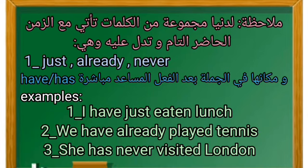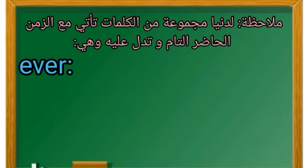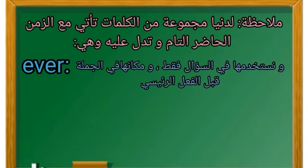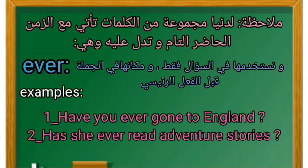We have already played tennis — نحن قد لعبنا كرة التنس مسبقًا. She has never visited London — هي لم تزر لندن أبدًا. أما ever فنستخدمها في السؤال فقط، ومكانها في الجملة قبل الفعل الرئيسي. مثال: Have you ever gone to England? — هل سبق لك أن ذهبت إلى إنجلترا؟